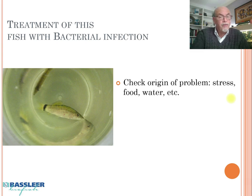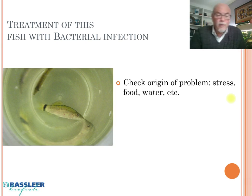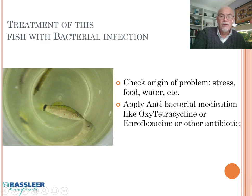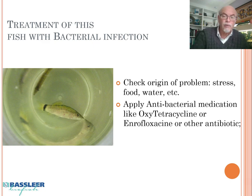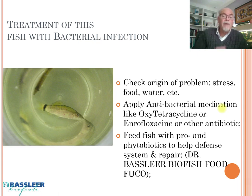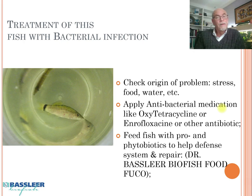Of course, first you have to check the origin of the problem — maybe it's the water quality, maybe it's the food source, such as frozen or live food polluted with too many microbes, or poor water conditions. Maybe the fish was shipped with a lot of stress and ammonia, which can cause bacterial infections. We recommend applying an antibacterial medication like oxytetracycline, enrofloxacin, or other antibiotics, and feeding the fish with pro- and phytobiotics to help the fish's defense system. For this case we use the Dr. Bassleer Biofish food.